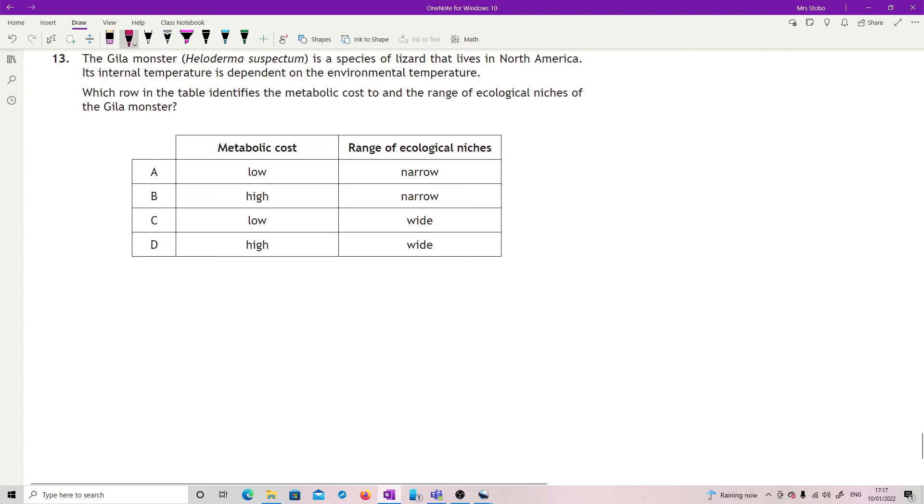Question thirteen: the Gila monster is a species of lizard that lives in North America. Its internal temperature is dependent on the environmental temperature. This tells you or should straight away - you're going that's a conformer. Which row in the table identifies metabolic cost and the range of ecological niches of the Gila monster? If you've got as far as saying conformer, then what you should be recognizing is the metabolic cost of that is low because I'm not actually having to burn lots of energy to regulate an internal temperature. But what this also means is that they don't have a particularly wide ecological range - they can only live exactly where the temperature is right for them to live, so it's narrow.